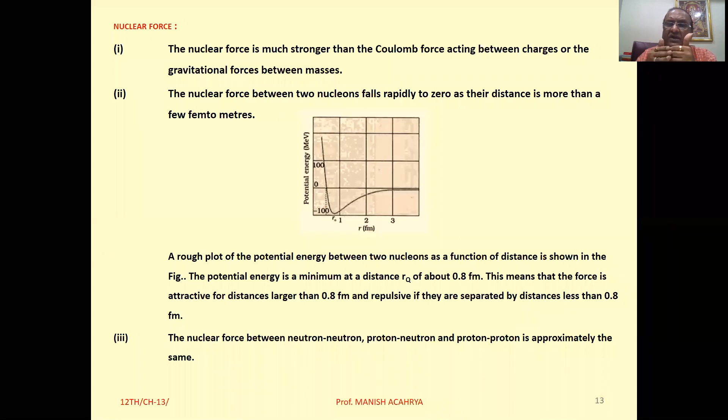Suppose we draw the graph of potential energy versus distance between nucleons. Then the graph will be as shown in the figure. And here we can observe at a distance R0 which is nearly equal to 0.8 Fermi, the potential energy becomes a minimum one. In this particular situation stable equilibrium will be there.